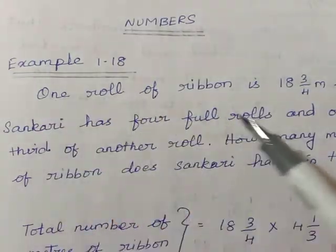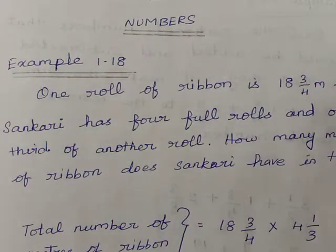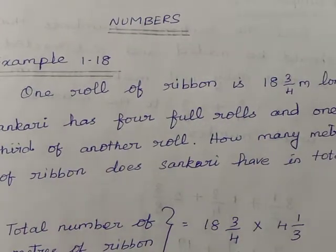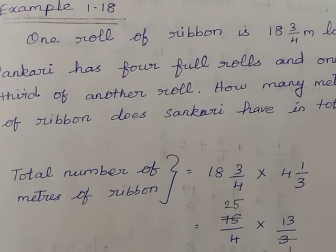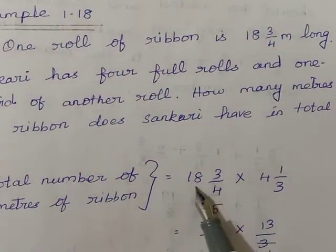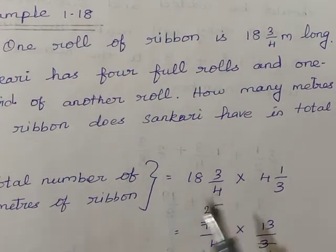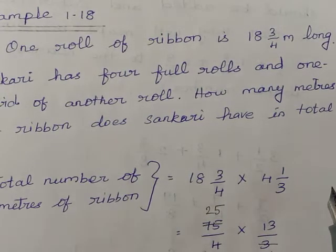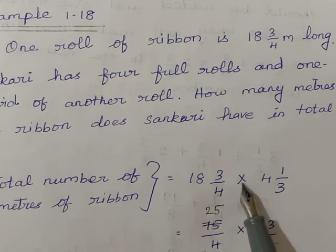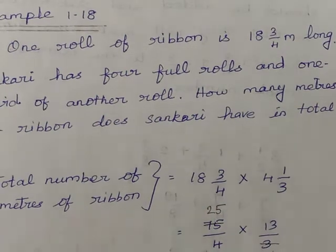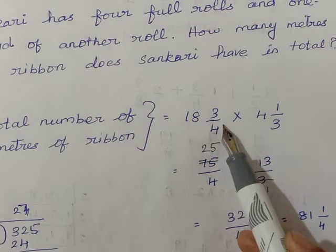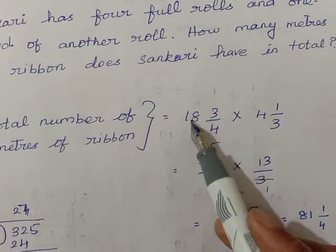Now Example 1.18. One roll of ribbon is 18 and 3 by 4 meters long. Shankari has 4 full rolls and 1 third of another roll. How many meters of ribbon does Shankari have in total? So 1 roll of ribbon is 18 3 by 4 meters. She has 4 rolls and 1 by 3 of a roll. We multiply 18 3 by 4 by 4 and 1 by 3 to get the total meters. First, convert the mixed fraction 18 3 by 4.